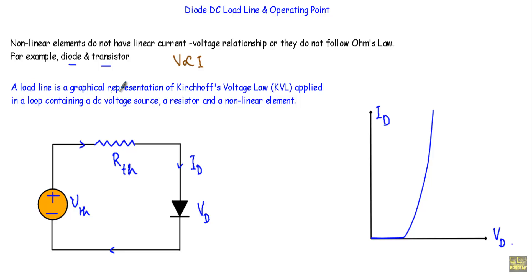A load line is a graphical representation of KVL applied in a loop containing a DC voltage source, a resistor, and a nonlinear element. If a circuit contains a DC voltage source, a resistor, and a nonlinear element, and if I apply KVL and represent that KVL equation graphically, it will give us an equation of a straight line, and that straight line will be known as the load line of that circuit.